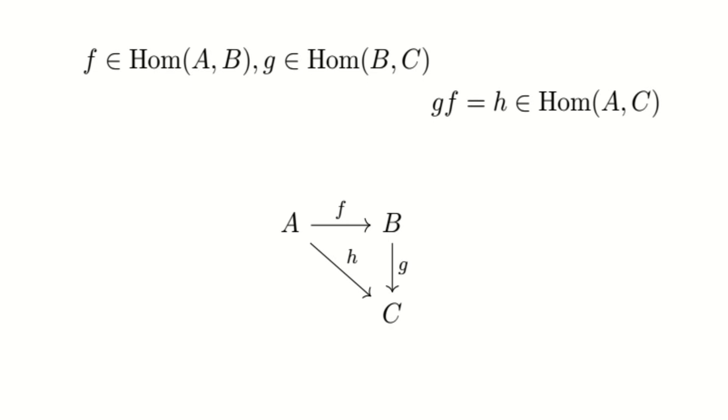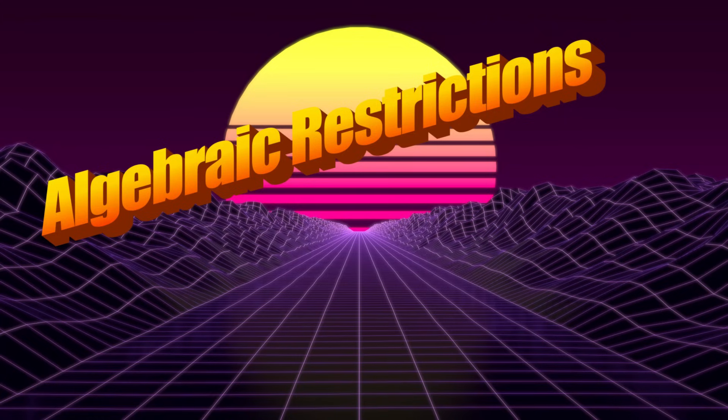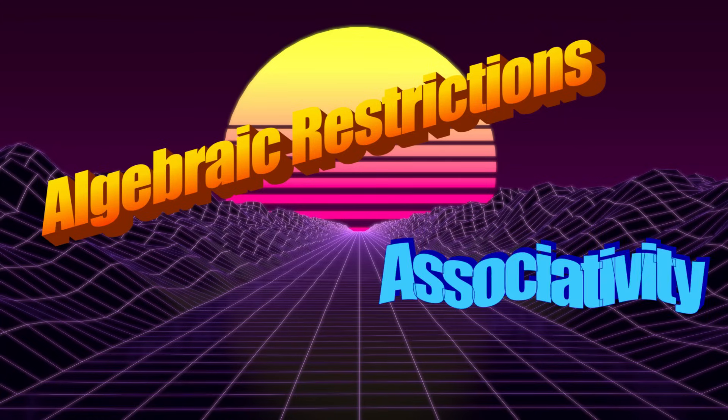We can also compose arrows. So, if we have an arrow from A to B, and B to C, we get an arrow from A to C that is equal to this composition. However, we also impose some algebraic restrictions on the arrows, such as associativity and identity.